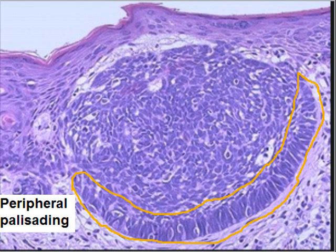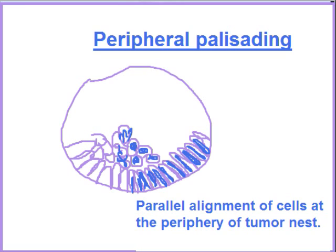In the center of the tumor nest, the cells are arranged haphazardly. You can make a sketch to illustrate this. Parallel alignment of cells at the periphery of the tumor nest is called peripheral palisading.